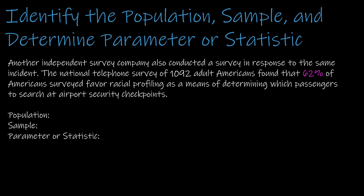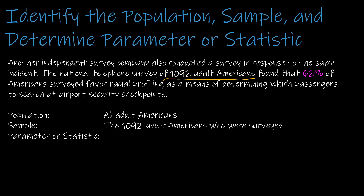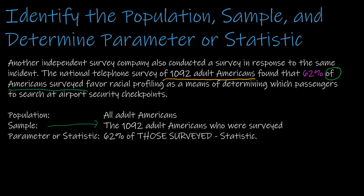Here's another practice question in blue — try it on your own. This one involves racial profiling as a means of determining which passengers to search at airport security checkpoints, based on a national telephone survey of adult Americans. The population is all adult Americans; the sample is the 1,092 actually spoken to. 62% of Americans surveyed — because it says 'of Americans surveyed,' referring specifically to those interviewed — makes 62% a statistic.